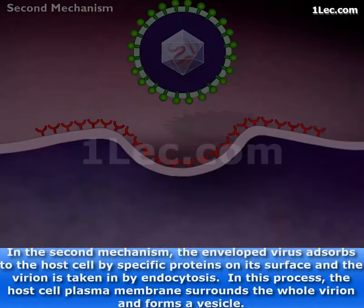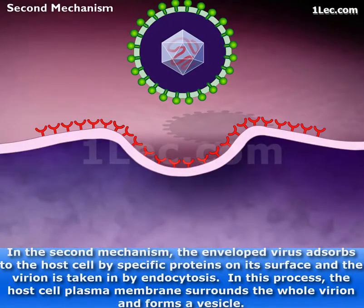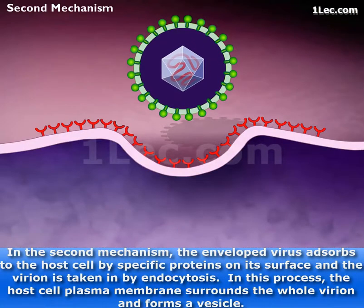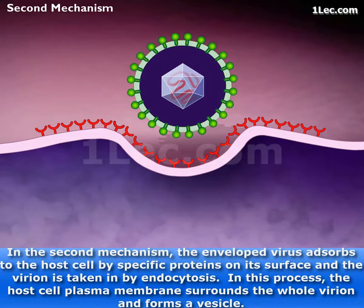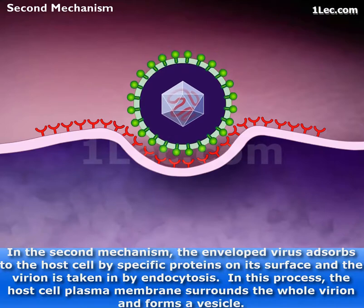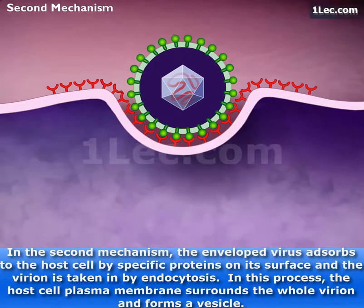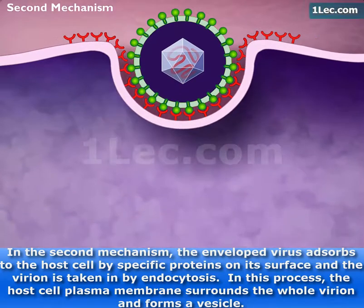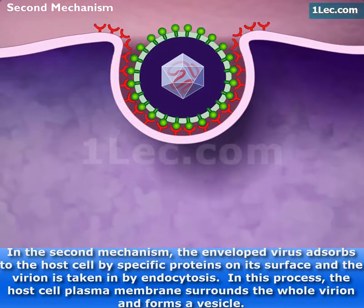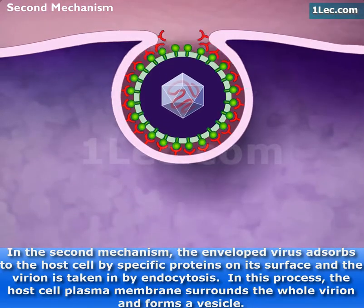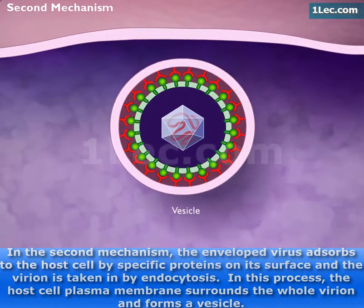In the second mechanism, the enveloped virus adsorbs to the host cell by specific proteins on its surface, and the virion is taken in by endocytosis. In this process, the host cell plasma membrane surrounds the whole virion and forms a vesicle.